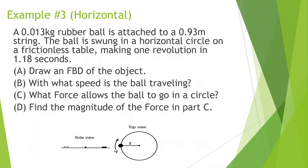A 0.013 kilogram ball is attached to a 0.93 meter string. The ball is swung in a horizontal circle on a frictionless table, making one revolution in 1.18 seconds. Draw a free-body diagram of the object. We have a force of gravity, a normal force, and a force of tension pointed toward the string.